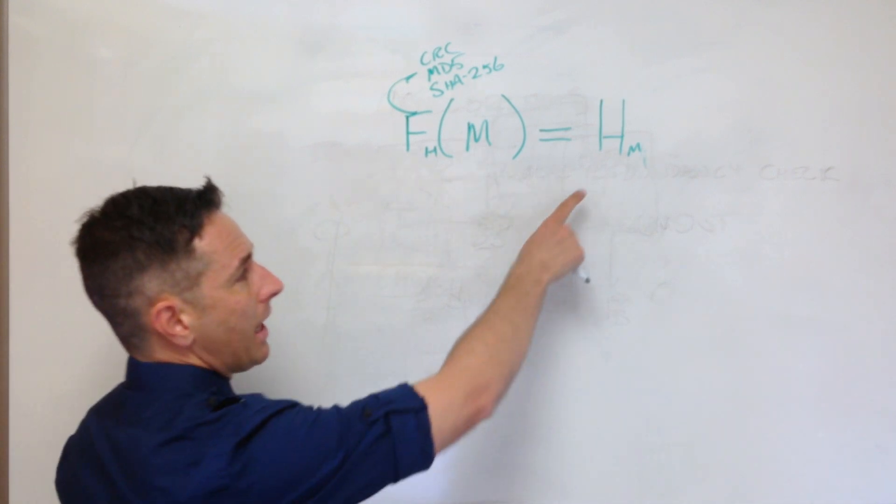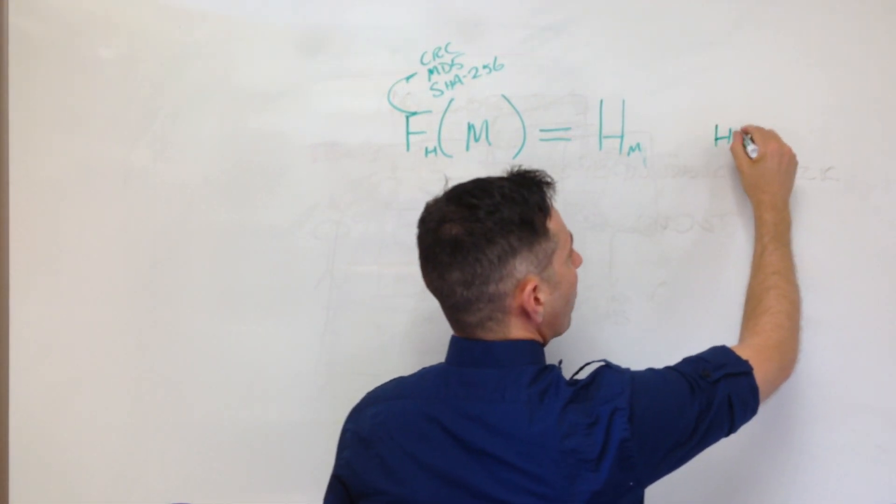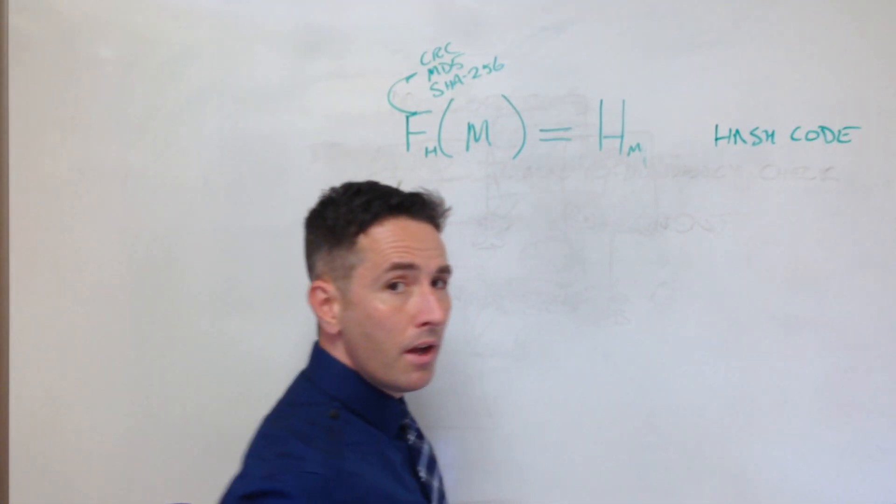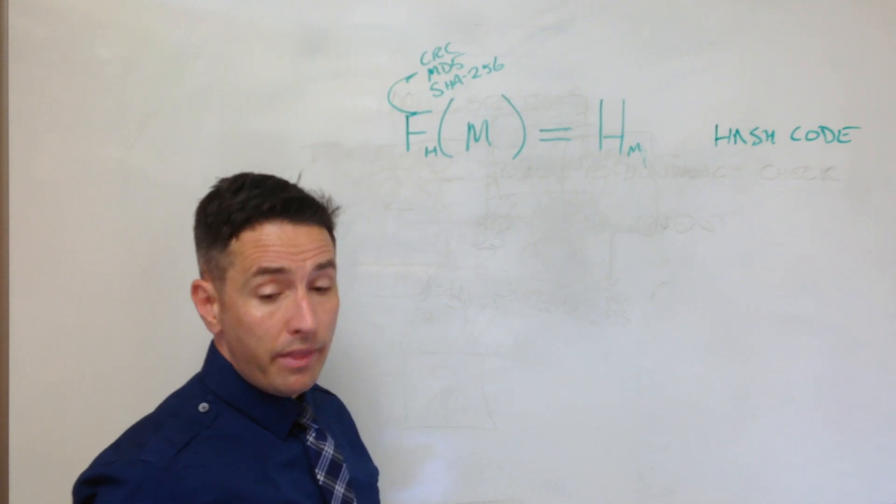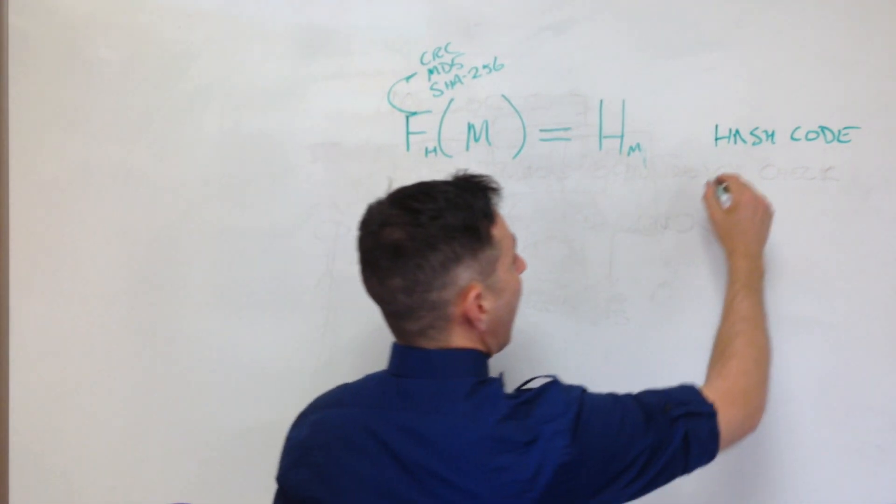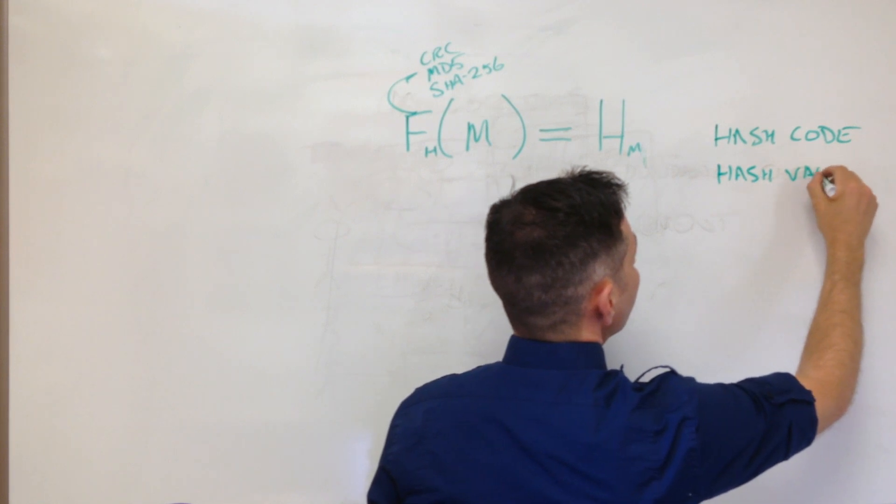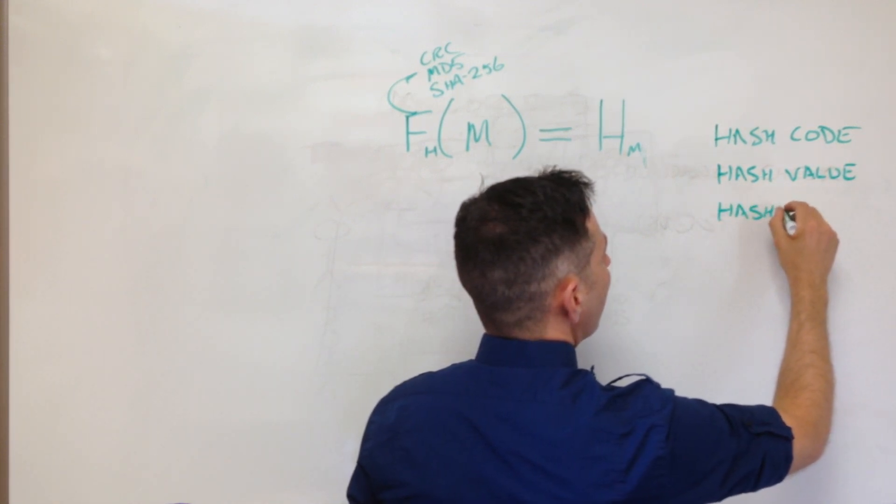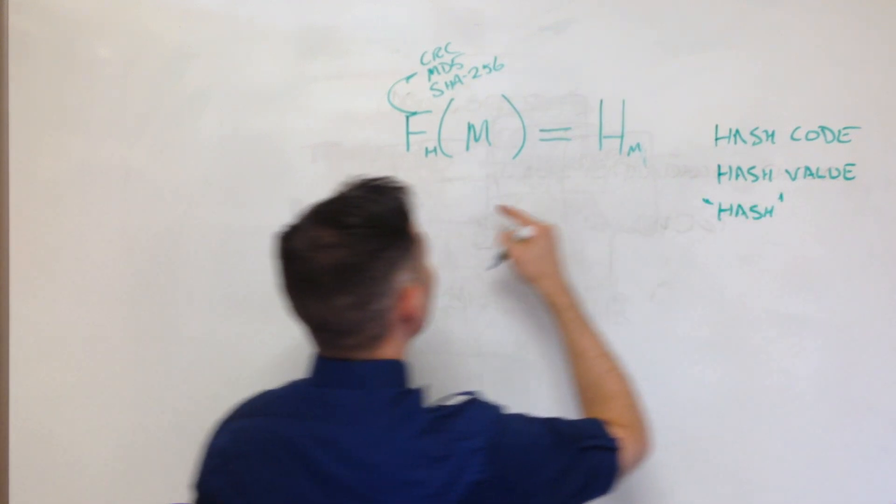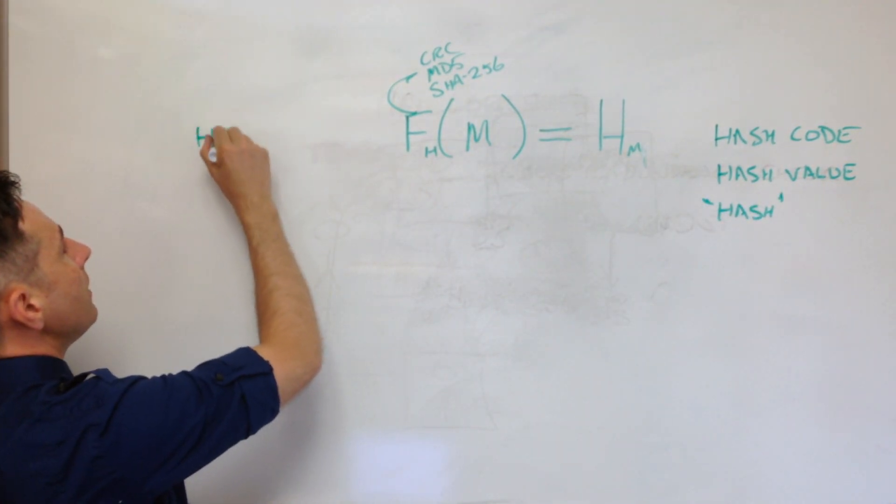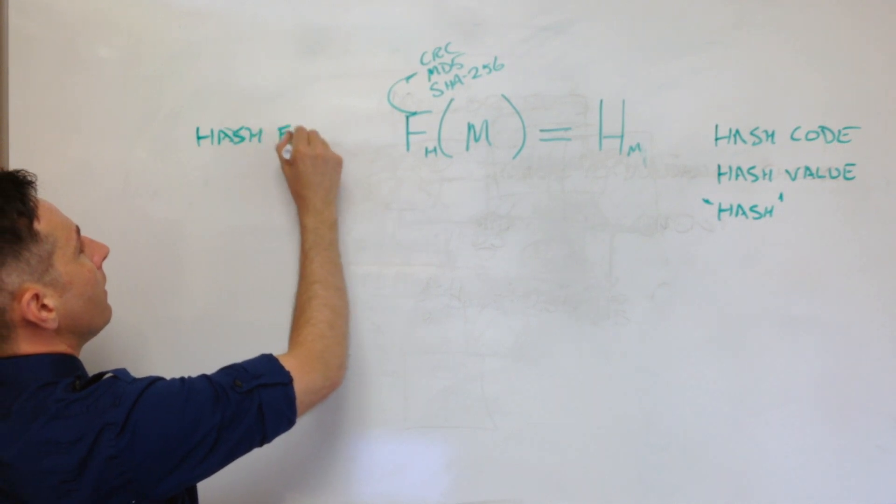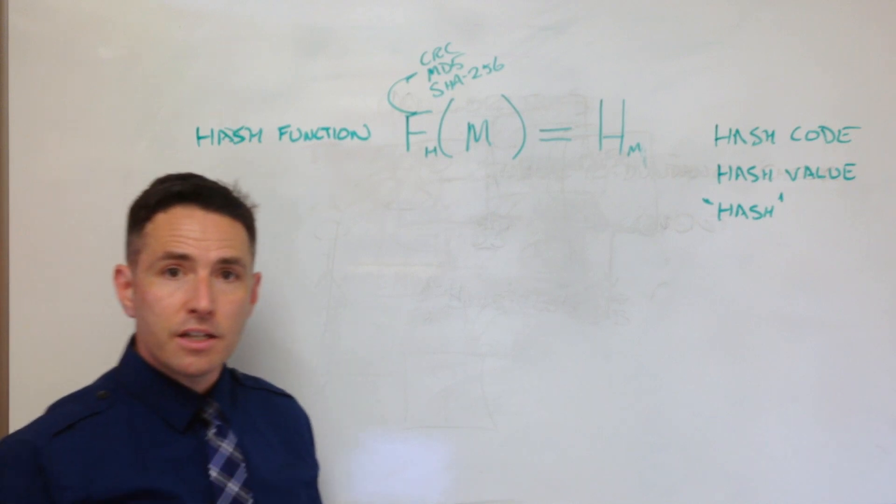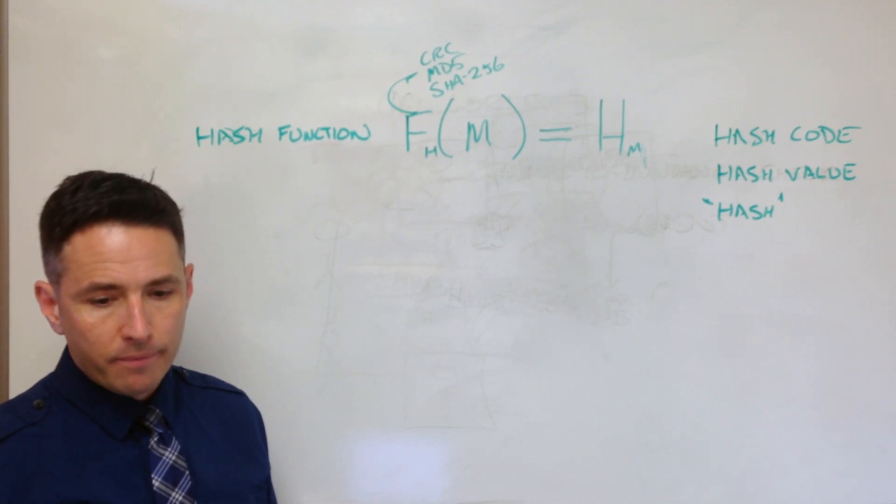Sometimes these go by different names. The one that I'm using, which is hash code, sometimes they go by the name hash value, sometimes it's simply called a hash, and then this thing here is called the hash function. The hash function takes the digital object and turns it into a fingerprint.